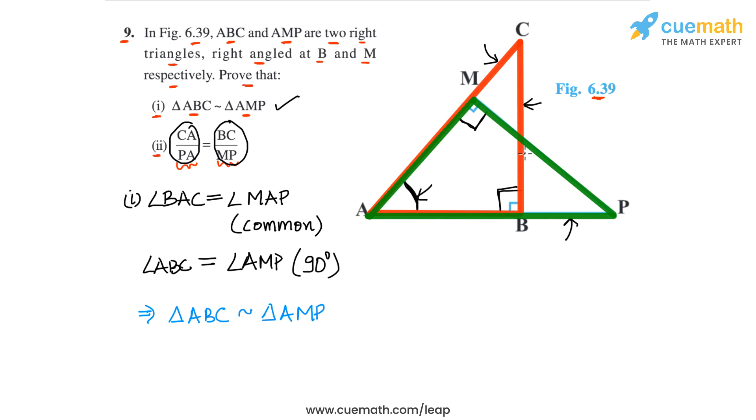And the second ratio is BC by MP. So let's see, BC is this side in the first triangle, MP is this side in the second triangle.